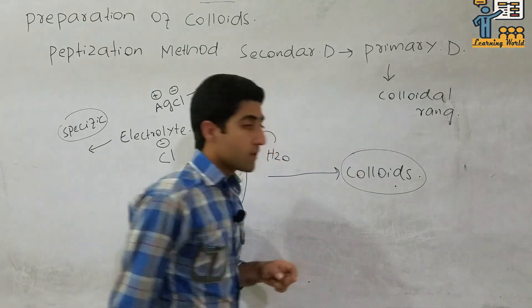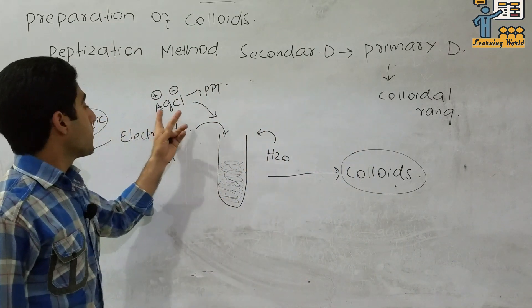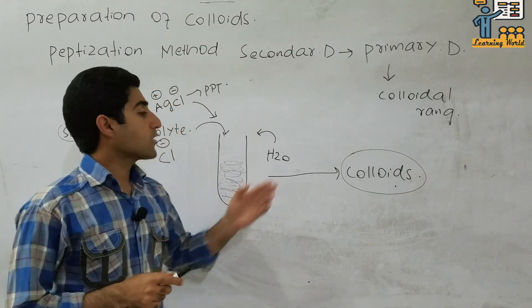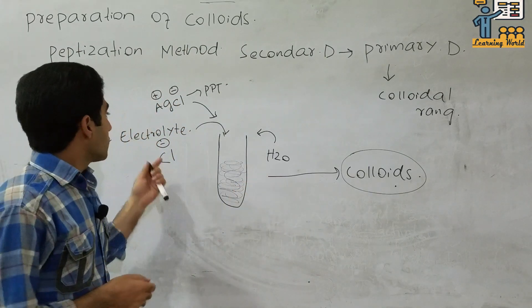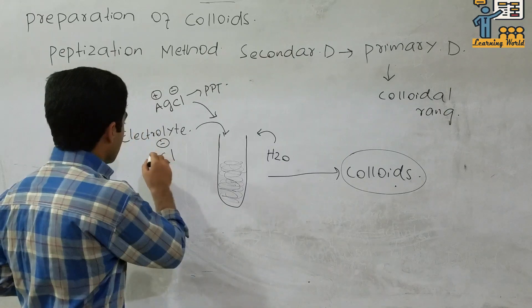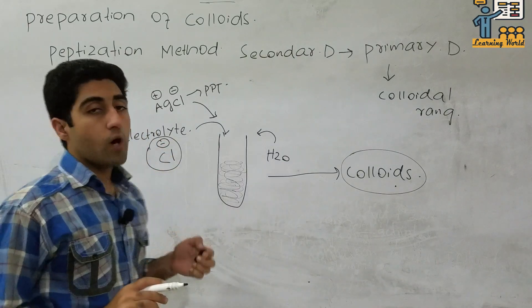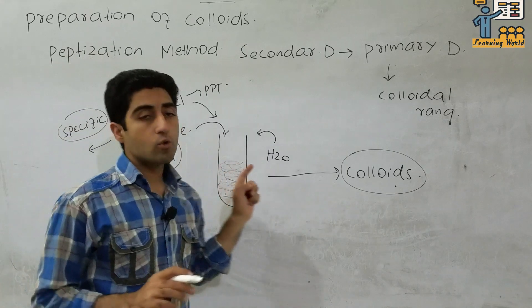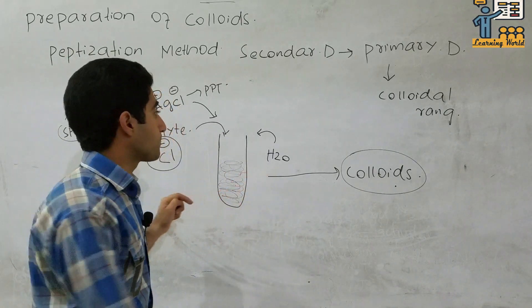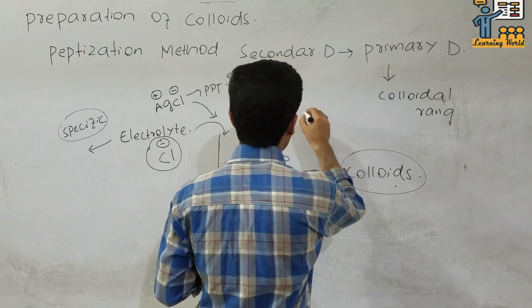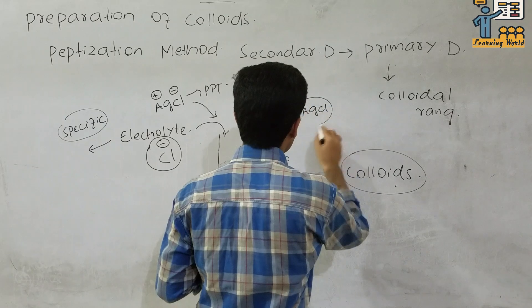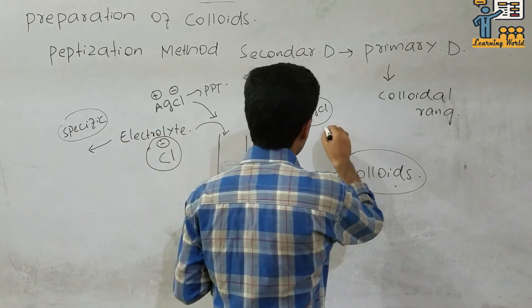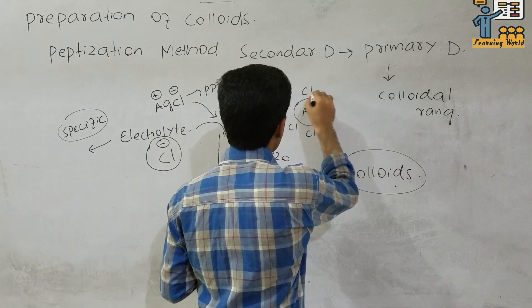Colloids are formed from the mixing of water with the precipitate and the specific electrolyte. The electrolyte has a negative charge, and the precipitate silver chloride also contains a negative charge from the chloride ion. When the electrolyte is added to the AgCl dispersion, the negatively charged electrolyte particles interact with the AgCl.